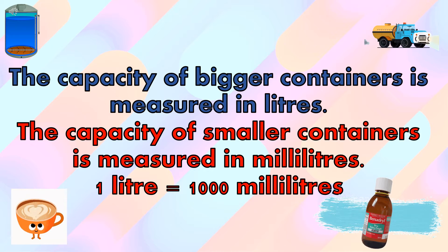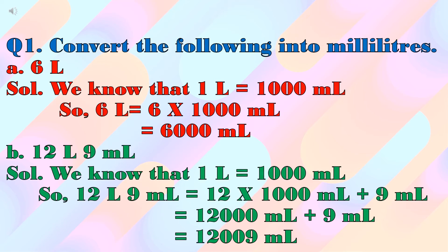One liter mein one thousand milliliters hoti hai. Now we will learn to convert the units of capacity. Our first question is: convert the following into milliliters. Part A is six liters. Children, we know that one liter is equal to one thousand milliliters, so six liters will be equal to six multiplied by one thousand milliliters.